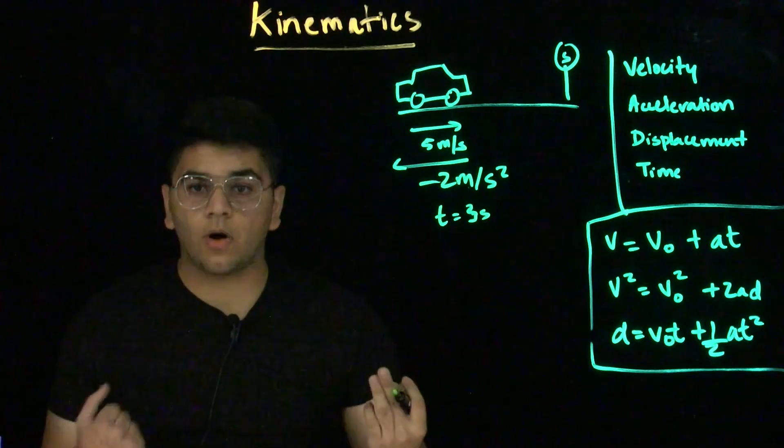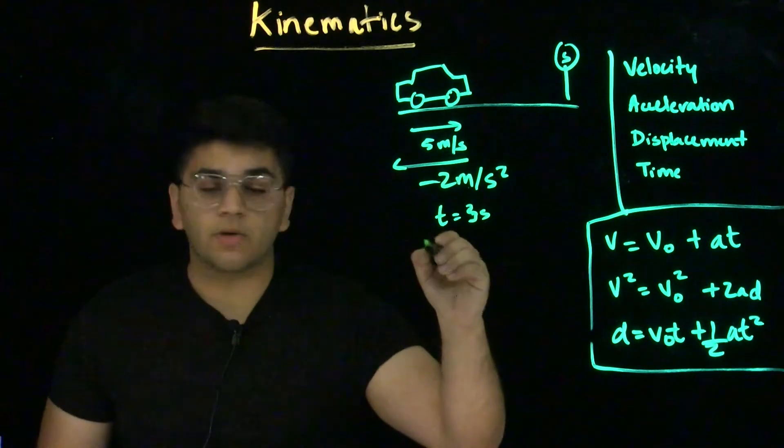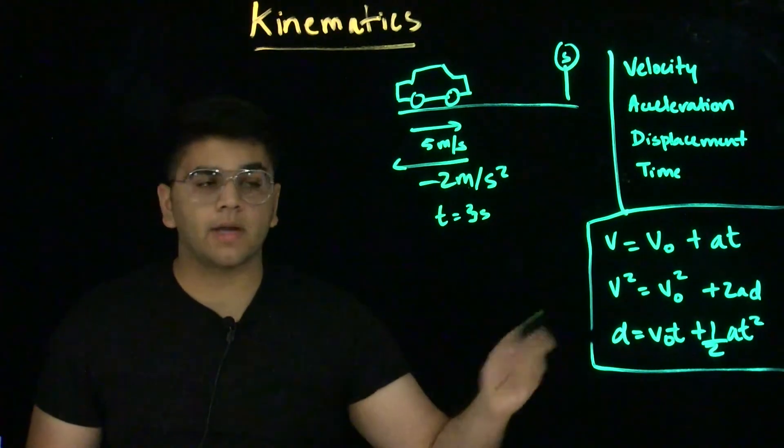A great way to always start these problems is to list out all the variables you know. There's 5 main variables we consider when we're looking at kinematics.